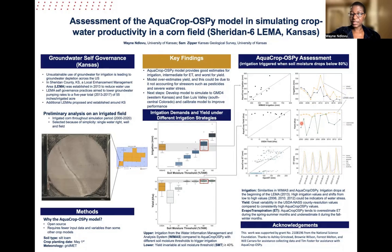Looking at the yield data, our AquaCrop model overestimates yields throughout the study period, whereas the county-level data are more variable. The OpenET data shows that AquaCrop simulation performs fairly well, though the model tends to overestimate ET in the spring to summer months and underestimates it in the fall months.